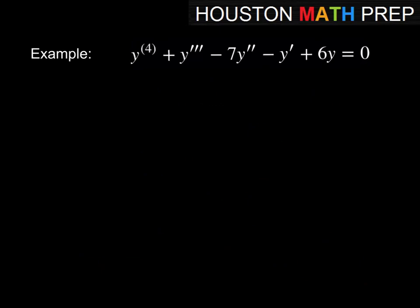Another one here, we have the fourth derivative of y plus the third derivative of y minus 7y double prime minus y prime plus 6y equals 0. Our auxiliary equation for this will be m to the 4 plus m cube minus 7m square minus m plus 6 equal to 0. Now you may be able to factor this just by looking at it. If you're not sure,